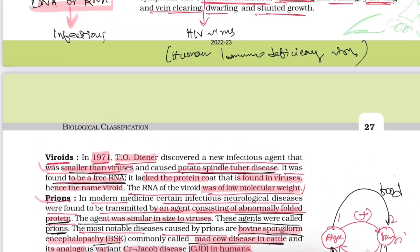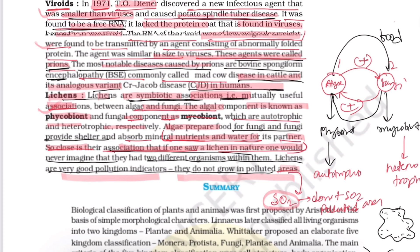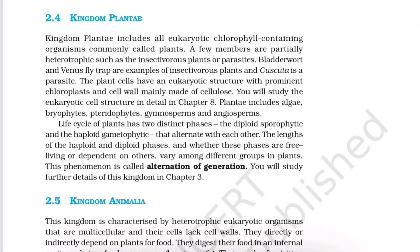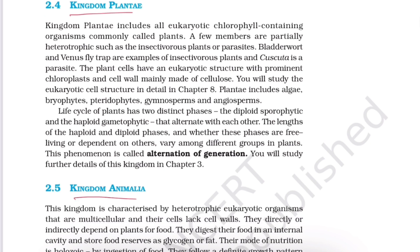That was all about viroids, prions, and lichens. One important note about Kingdom Plantae: bladderwort and Venus flytrap are examples of insectivorous plants, and Cuscuta is an example of a parasitic plant. Mark only this line as important here.